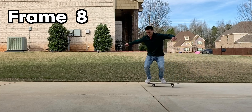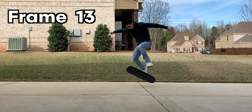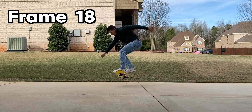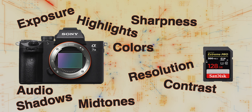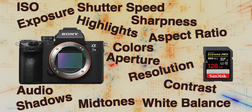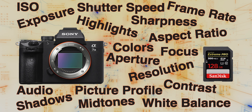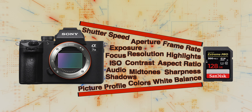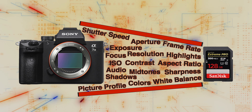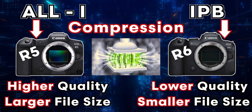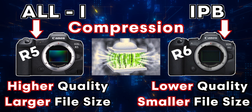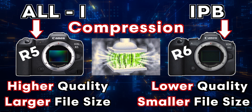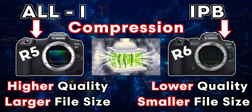Starting out, when taking video you're basically capturing at least 24 still frames every second, which means that there is a lot of data being recorded and that data needs to be compressed or else you'll have huge file sizes. All-I and IPB are simply two different ways of compressing your video that result in different file sizes and video quality.